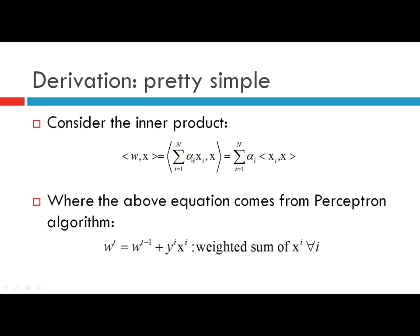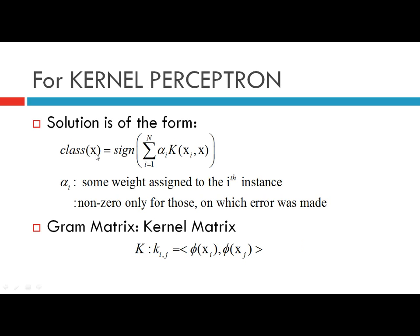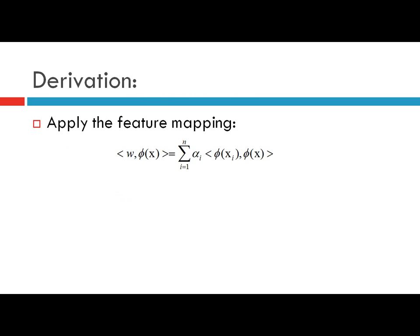The scalar alpha_i assigned to each training instance xi takes care of deciding which training instances resulted in an error during the learning phase. Applying feature mapping phi to x — taking the inner product of w and phi(x) — and applying the feature mapping phi gives us that the inner product of w and phi(x) equals the sum over i from 1 to N of alpha_i times the inner product of phi(xi) and phi(x). Hence the learning rule is derived: the sign of the sum over i from 1 to N of alpha_i times K(xi, x).